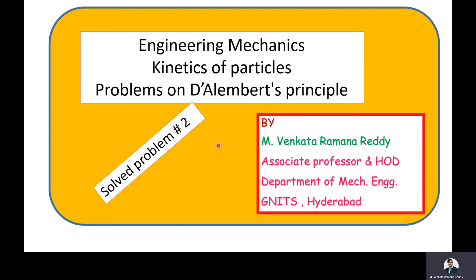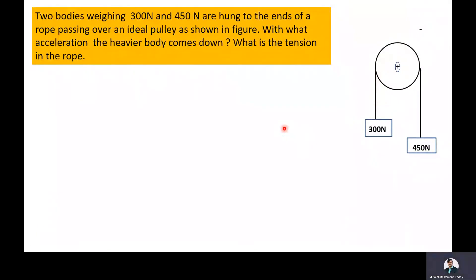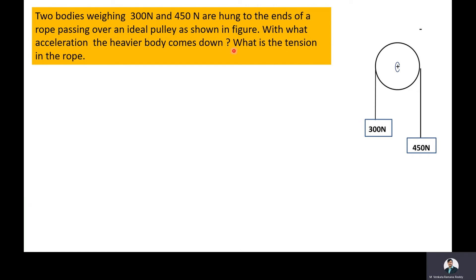Now we will enter into the problem. The given problem is: two bodies weighing 300N and 450N are hung to the ends of a rope passing over an ideal pulley as shown in the figure. With what acceleration does the heavier body come down, and what is the tension in the rope?